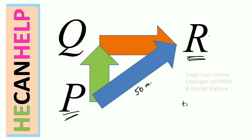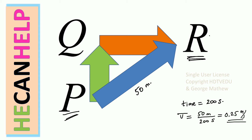What is the time it takes to go from P to R? It is 200 seconds. Average velocity equals displacement divided by time: 50 meters divided by 200 seconds, which gives 0.25 meters per second.